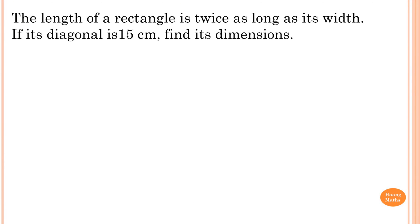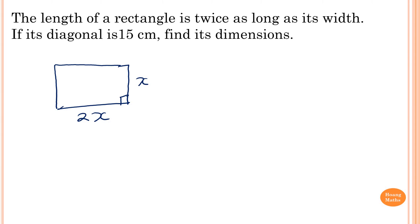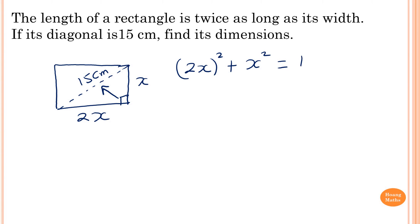The length of a rectangle is twice as long as its width. If its diagonal is 15 centimeters, find its dimensions. We draw a diagram: the width is x and the length is 2x. The diagonal from corner to corner is 15 centimeters. To find x, we apply the Pythagorean theorem: (2x) squared plus x squared equals 15 squared.